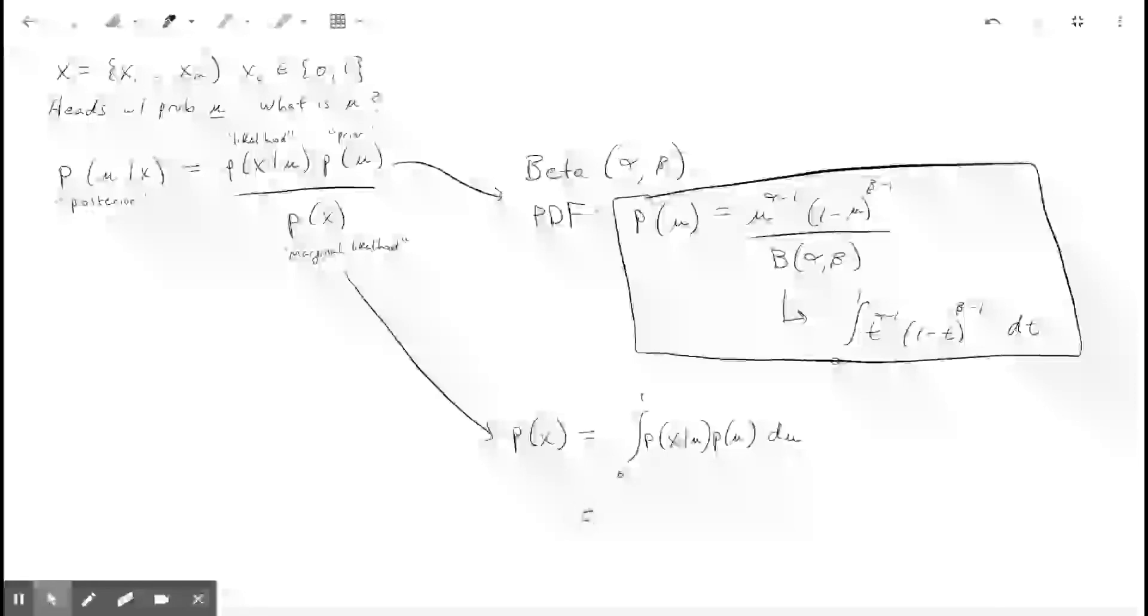But we can write this out a little bit further, because we already know this. This is our likelihood from before, and so that's just mu to the... well, let's actually write the likelihood real quick, and then we'll come back to it.